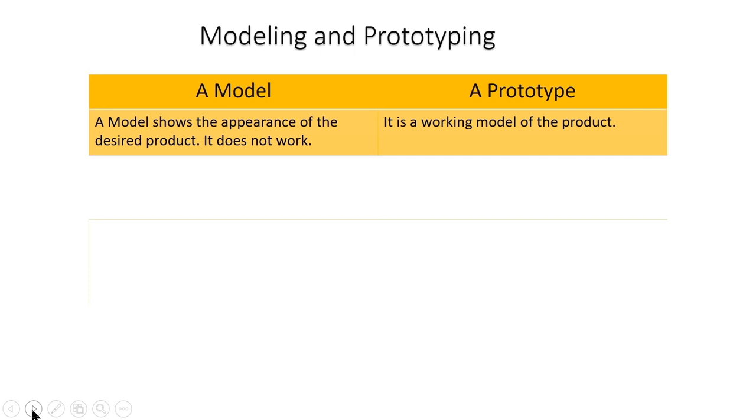After getting final dimensions, we go for testing of the design by creating either a model or a prototype of the desired product. The first difference between a model and a prototype: a model shows the appearance of the desired product but it does not work. When we say 'I have developed a model' in product design, that model just shows the physical appearance — the exterior of the product — how the product will look after development.